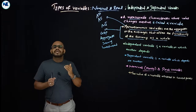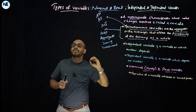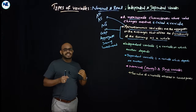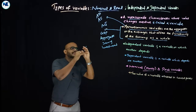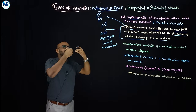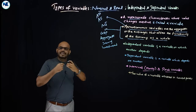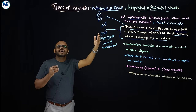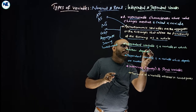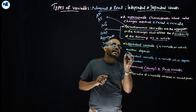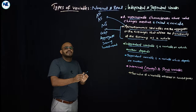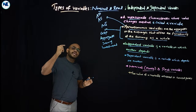Next, we need to discuss independent and dependent variables, after which we will cover nominal and real variables. An independent variable is a variable on which another variable depends. Simply put: an independent variable is a variable on which another variable depends.